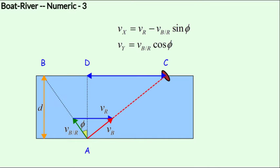At this stage, you might be tempted to think, if we increase sine of phi to the maximum, then vx would get to the minimum and therefore, we would have the minimum drift. But no, as you increase phi, the vertical component of vb, or vb with respect to r, will begin to decrease.